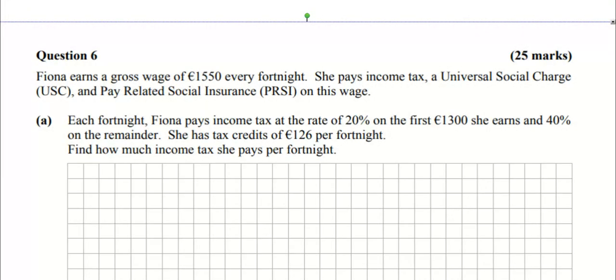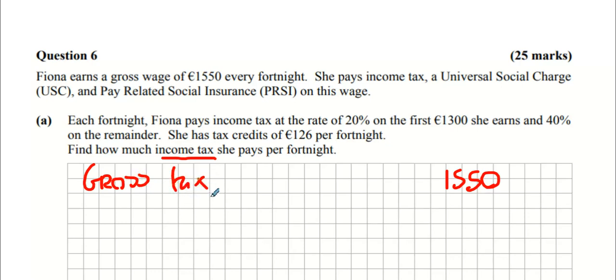Question 6: Fiona earns a gross wage of €1550 every fortnight. She pays income tax, universal social charge, and pay-related PRSI on the wage. We want to know what income tax is - it's tax you pay to the government. I usually make a list: gross income or gross wage, tax at 20%, tax at 40%, add them both together to get gross tax.